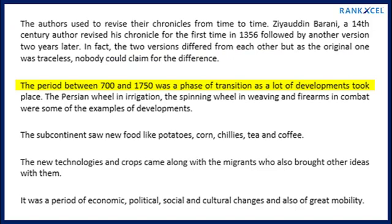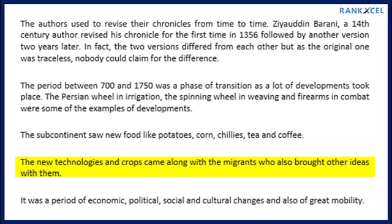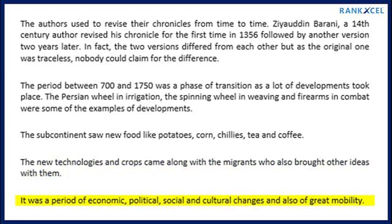The period between 700 and 1750 was a phase of transition, as many developments took place. The Persian wheel in irrigation, the spinning wheel in weaving, and firearms in combat were some examples. The subcontinent also saw new foods like potatoes, corn, chilis, tea, and coffee. New technologies and crops came along with migrants, who also brought other ideas. It was a period of economic, political, social, and cultural changes and of great mobility.